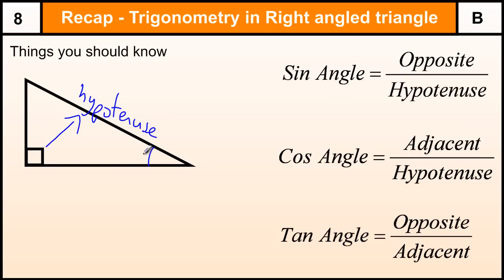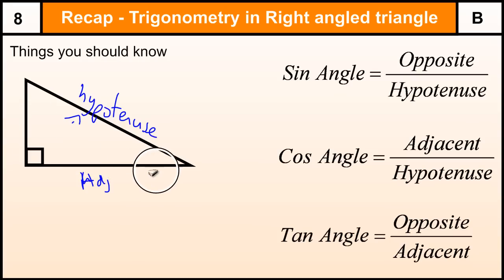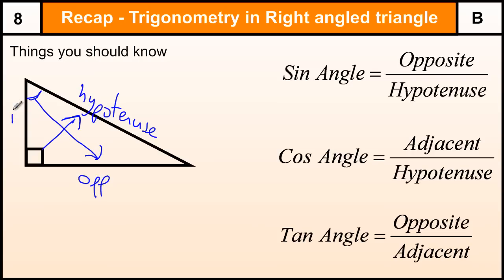If we are using angle A, then our opposite side is the one opposite the angle, and our adjacent side is the one next to the angle that is not the hypotenuse. If we are using the other angle up here, the hypotenuse is still opposite the right angle, but now our opposite side and adjacent side swap positions. So it does depend on which angle we are using when we label the triangle, and we should do that before we try to use any of the formulas.